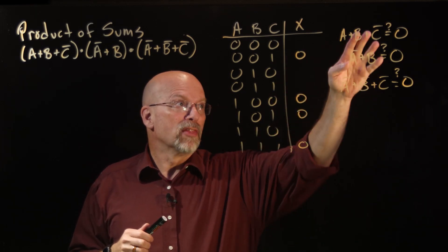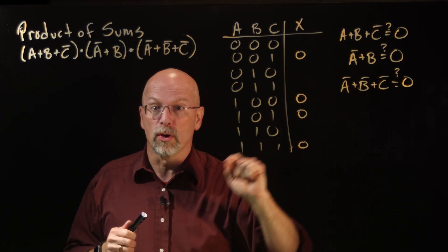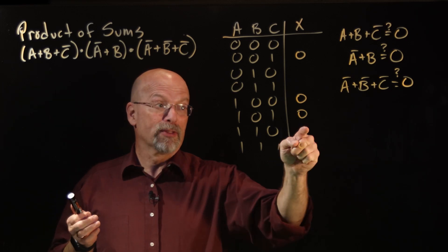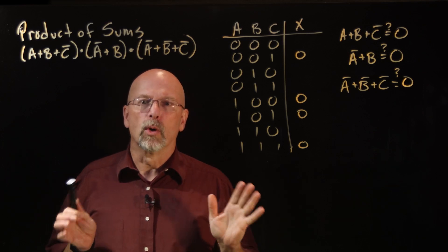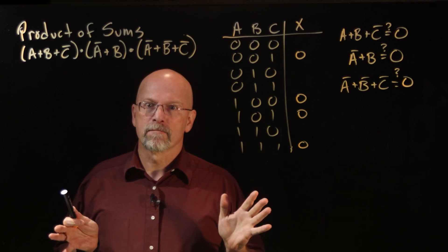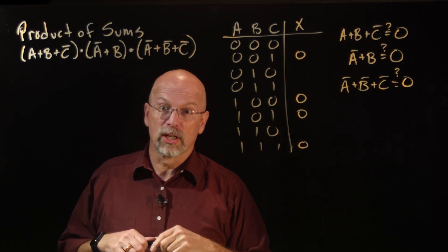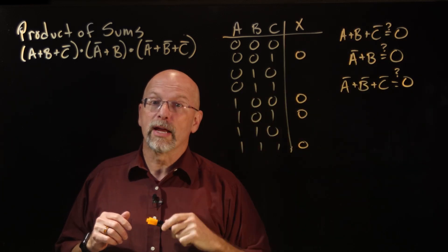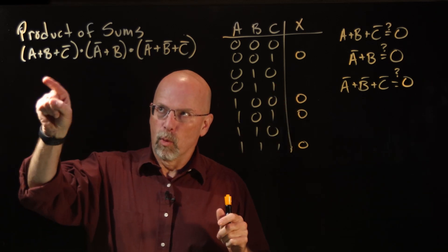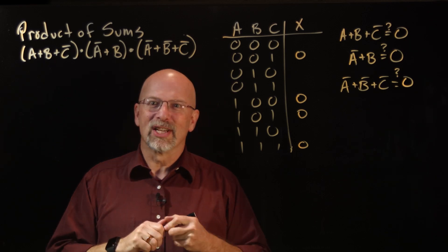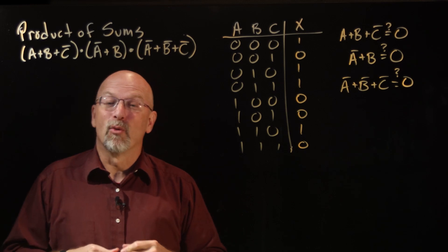We've already isolated that these sums equal zero in specifically these four locations and that's it. What does it mean for the other locations? That means all three of these sums equal one. These are the unique positions where each one of those sums equals zero. So for all the remaining rows that we haven't filled in, those are going to be one AND one AND one, which is one. All the rest of those locations have ones in them.